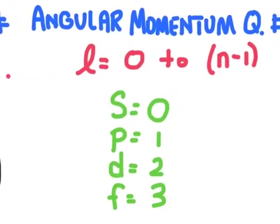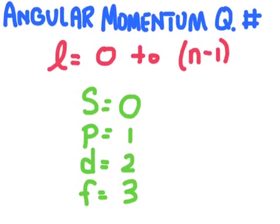The angular momentum quantum number uses the letter l as its symbol. And this is going to be numbers zero to n minus one. And this is based on a given n value. So for example, if n is equal to three, there will be l values of zero, one, and two.